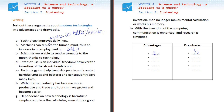Next idea, C: 'Scientists were able to send astronauts to the moon thanks to technology.' So this is, of course, an advantage.